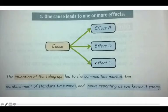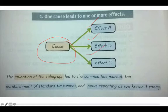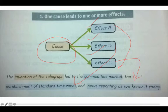Here are three examples. First, this is one cause leading to one or more effects: cause A leads to this effect, this effect, and this effect. Here's an example: the invention of the telegraph led to commodities markets, the establishment of standard time zones, and news reporting as we know it today. That's your cause; those are your three effects.